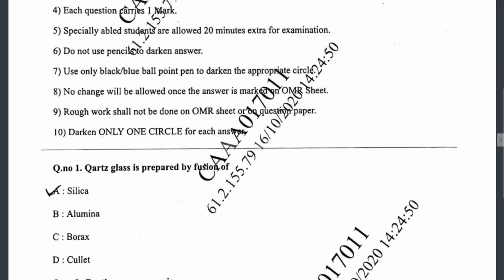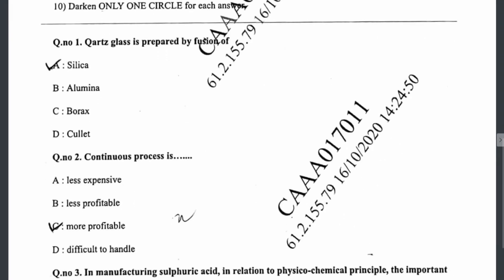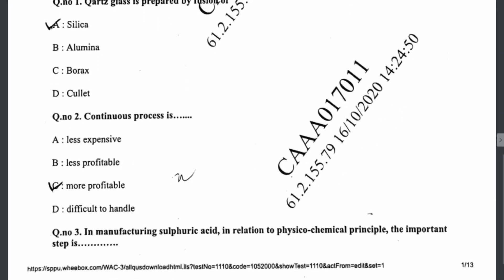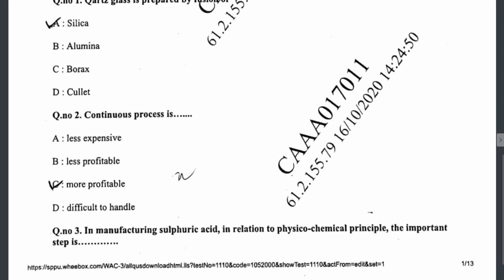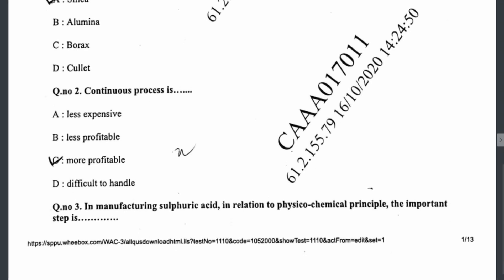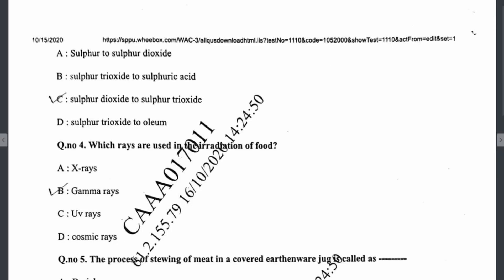Question one: quartz glass is prepared by fusion of silica — that is the answer. Question two: continuous processes are more profitable. Question three: in the manufacturing of sulphuric acid, in relation to physico-chemical principle, the important step is the conversion of sulphur dioxide into sulphur trioxide.